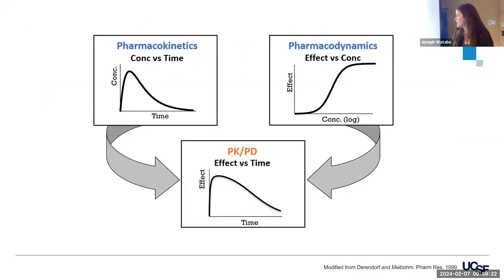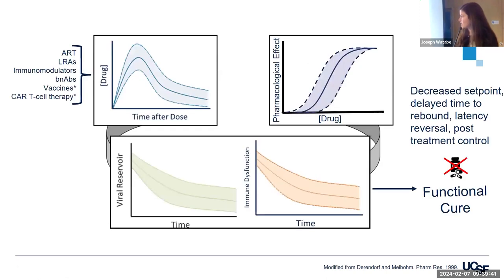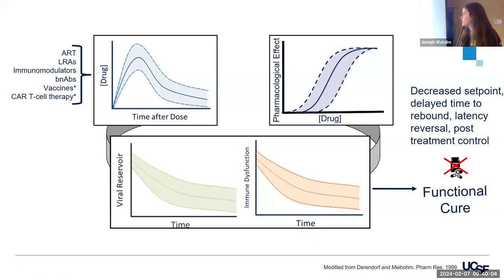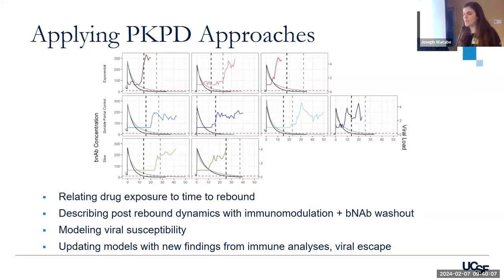This is the age-old PKPD figure. Drug exposure is the concentration over time, which isn't that meaningful without understanding how that concentration relates to effect and then how that relates to whatever effect you'd like to see over time. I edited this for HIV cure — our agents' exposure and their effect hopefully decreasing viral reservoirs, decreasing immune dysfunction and potentiating positive anti-HIV immune function, and really toward functional cure. Those outcomes have become decreased set point, delayed time to rebound, latency reversal, and post-treatment control.